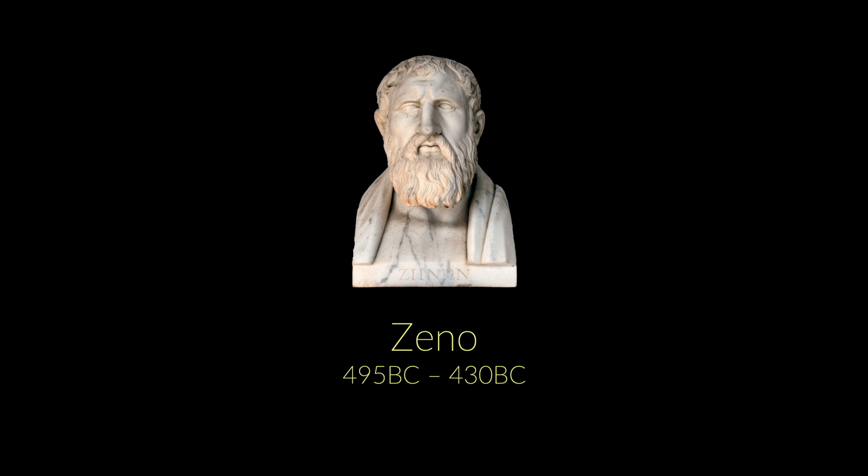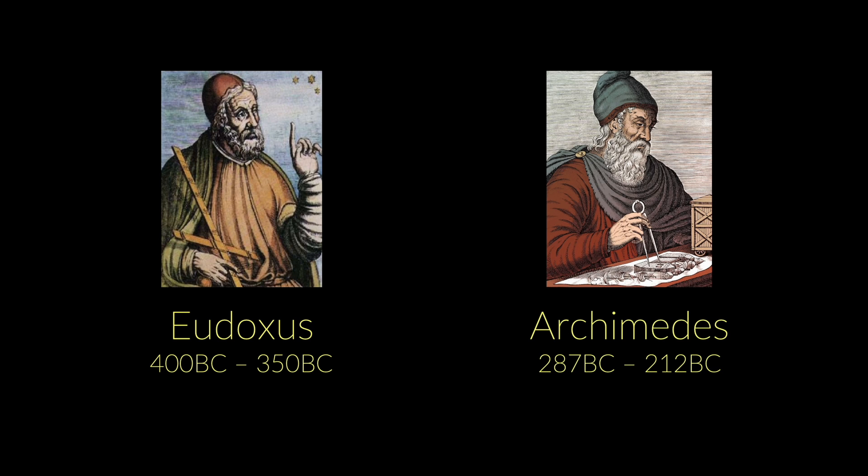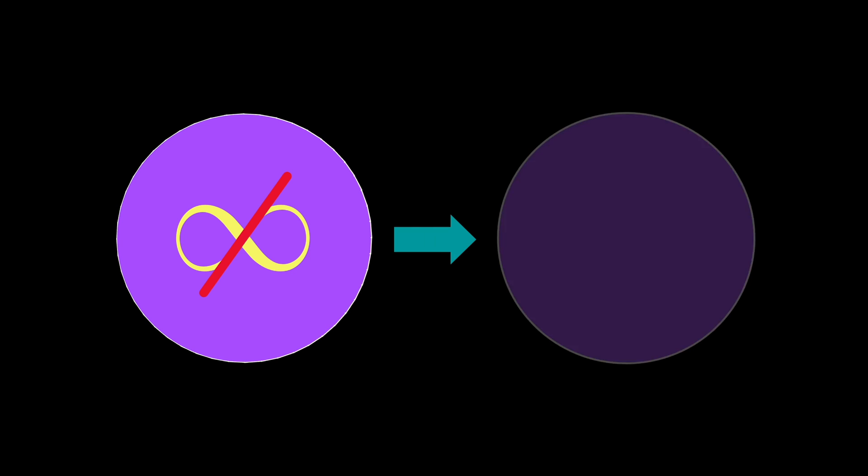In fact, infinity became a taboo for the ancient Greeks, and they developed what came to be known as the horror of the infinite. So the method of Antiphon had to be modified for it to be accepted by the ancient Greeks. This was accomplished by Eudoxus, and later improved by Archimedes. Eudoxus and Archimedes used solid logical arguments to show that our polygon need not go all the way to infinity for us to be able to make assertions about the area of the circle.